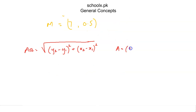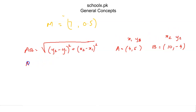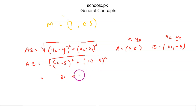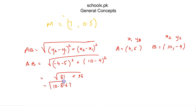Our point A was (4, 5) and B was (10, negative 4). Labelling B as (x2, y2) and A as (x1, y1), we get: y2 minus y1 is negative 4 minus 5, which is negative 9, and x2 minus x1 is 10 minus 4, which is 6. So the distance is the square root of 81 plus 36, giving approximately 10.8167.